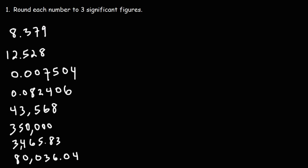Now let's work on some practice problems. Round each number to three significant figures. Starting with 8.379 — let's focus on the third significant digit from the left, that's a 7. Looking at the number to the right, that's a 9, so that's part of the category of being 5 or more. So we're going to round a 7 up to an 8. This is going to be 8.38, and this number has three sig figs.